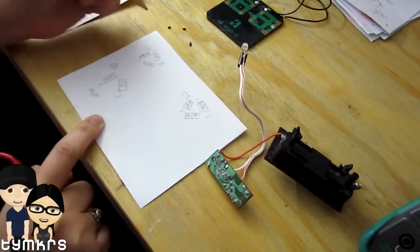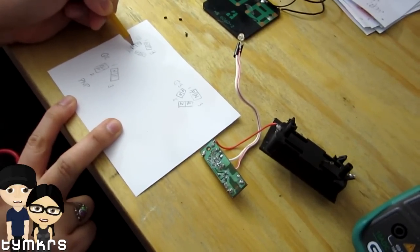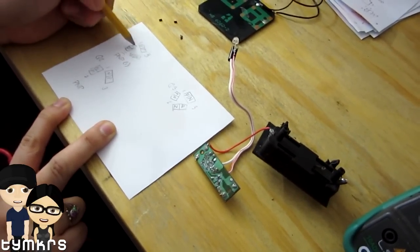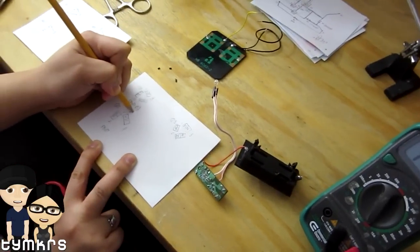Now the problem with these two other ones is that this one could be a PNP with 1 as the base, but it could also be an NPN with 2 as the base.